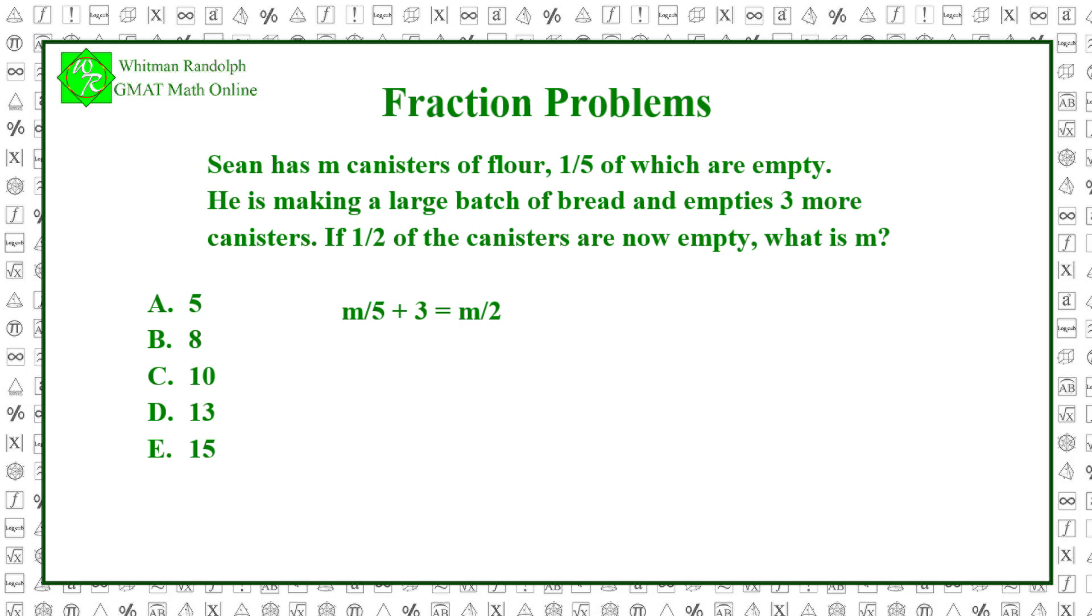Now, we solve this equation for m by multiplying each side by ten, which is the least common denominator of five and two. So, multiplying by ten, we get two m plus thirty equals five m. Therefore, thirty equals five m minus two m, and so thirty equals three m. Finally, we get ten equals m. So, the correct answer is C.